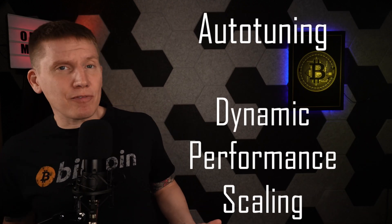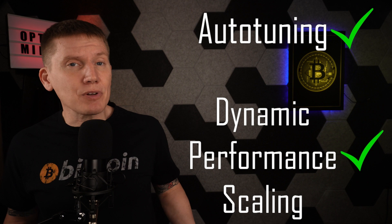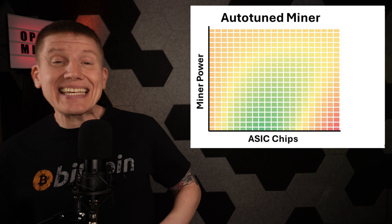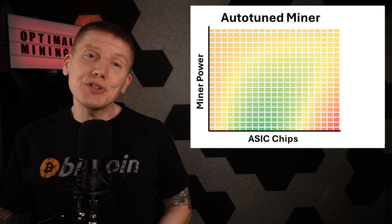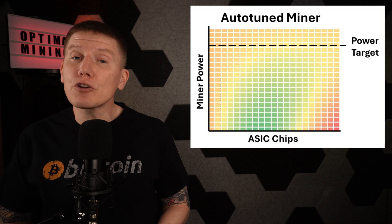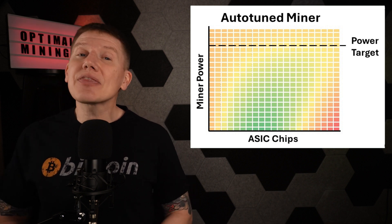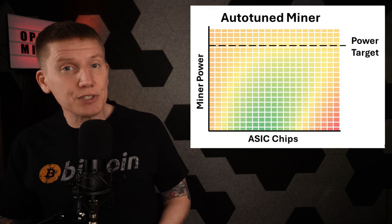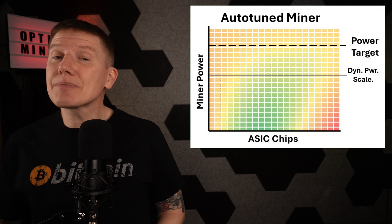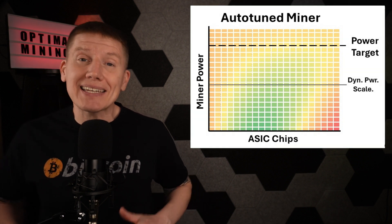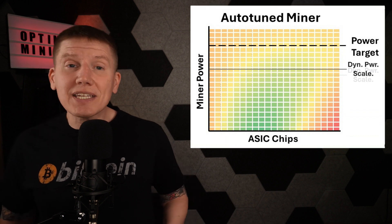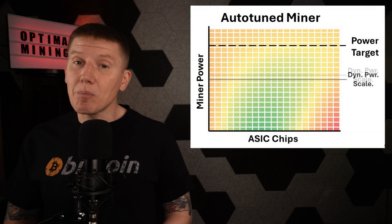With auto-tuning and dynamic performance scaling each described separately, how do these two features work together? When dynamic performance scaling is set up, all you have to do is set the power target to one of those auto-tuned power levels, and set the power step value equal to the separation between your auto-tuned power levels. This way, as the dynamic performance scaling steps the power of your miners up and down, it will always land on an optimized power level, so that you're always getting the best performance out of your miners.